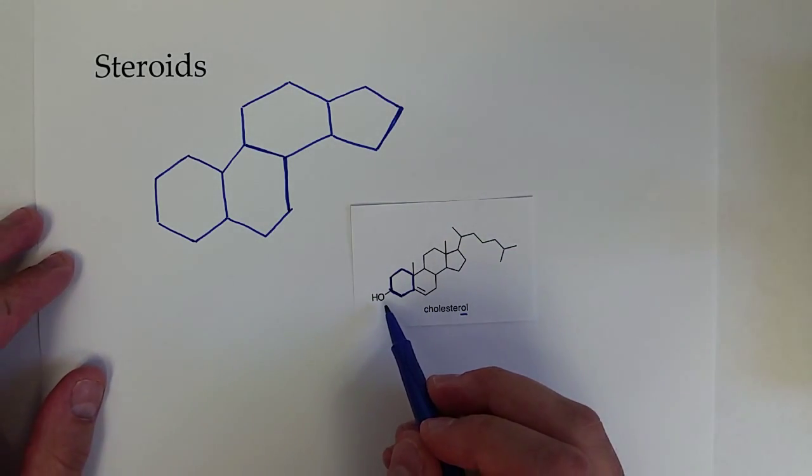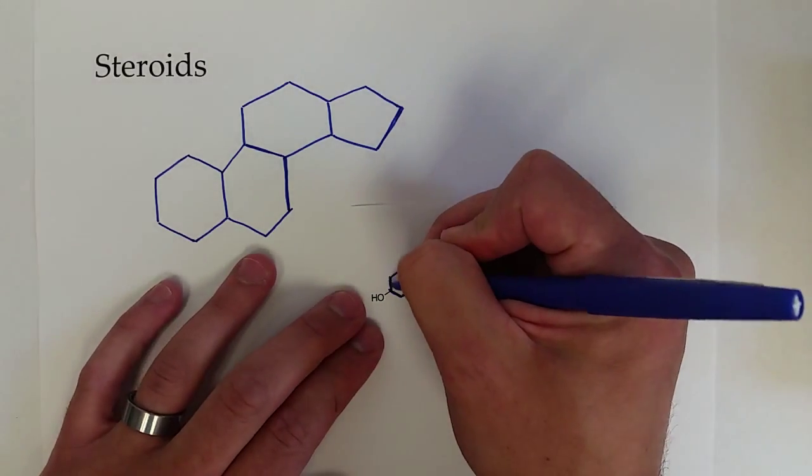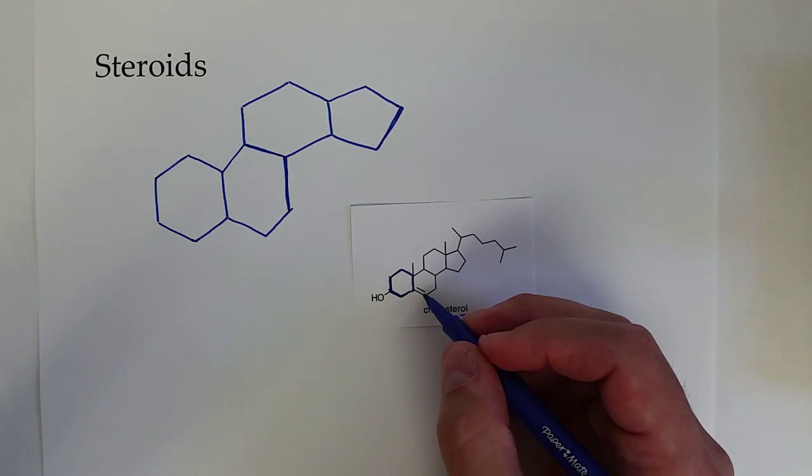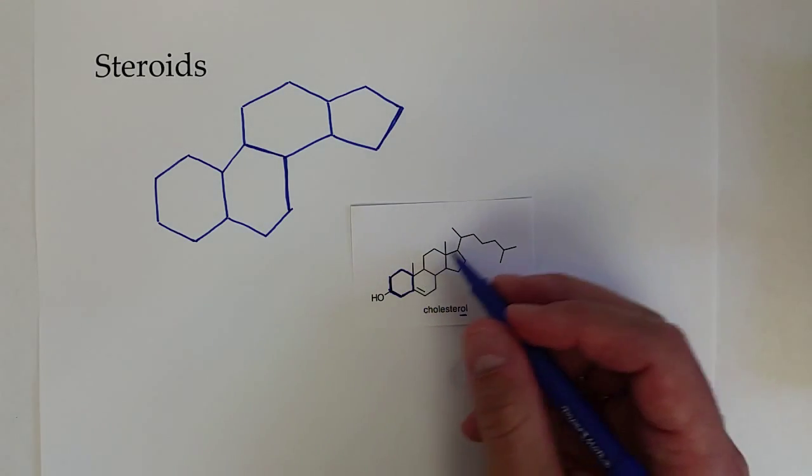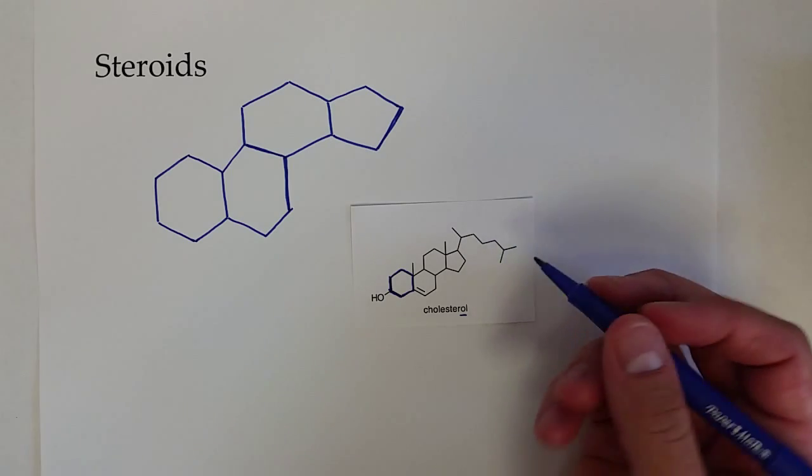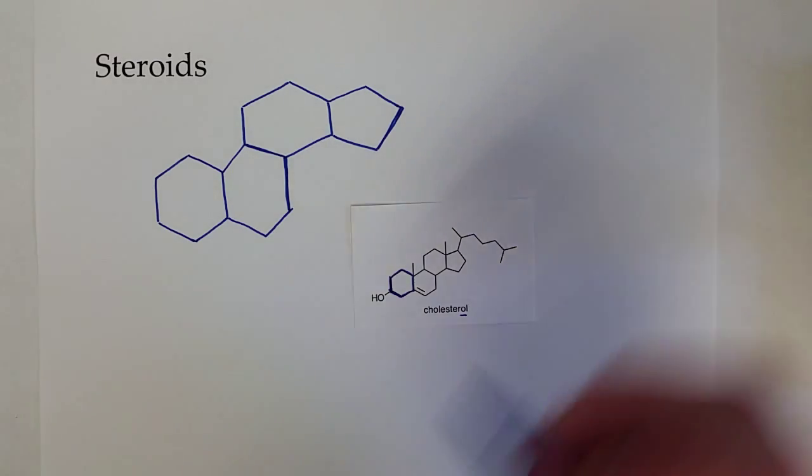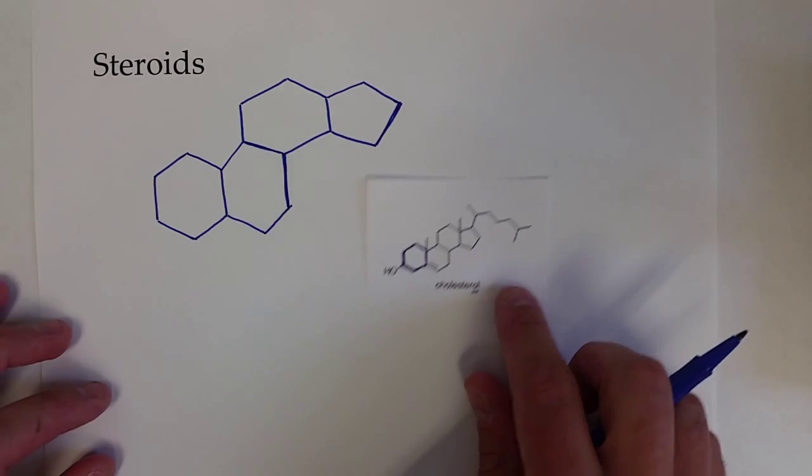And a couple of alkyl chains, including a big alkyl side chain off of the five-member ring. Cholesterol has a lot of different biological functions, including structural support to cell membranes.